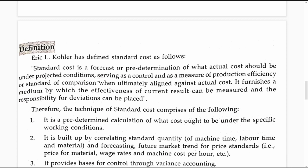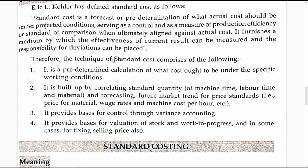Kochler's definition tells us that standard cost is a predetermined cost of what is going to be incurred under projected conditions for producing. It serves as a control mechanism and contributes to improving efficiency of personnel. The technique of standard cost comprises: first, a predetermined calculation of what cost ought to be under specific working conditions in relation to a given activity.